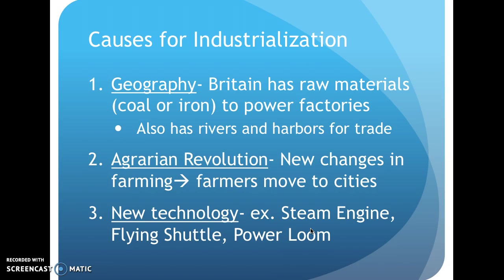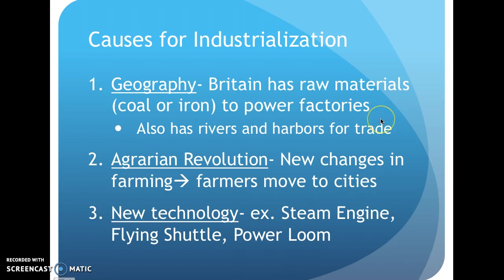Causes for industrialization — why does the Industrial Revolution begin? One of the biggest causes is geography. Britain has a ton of natural resources and raw materials. They have coal and iron, and these raw materials are used to power factories. Without raw materials in the ground you can't power factories, so Britain is a prime location.